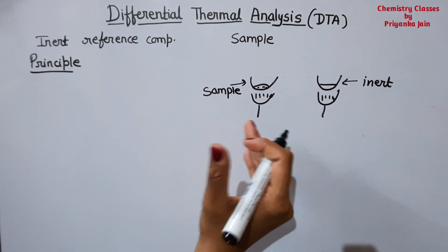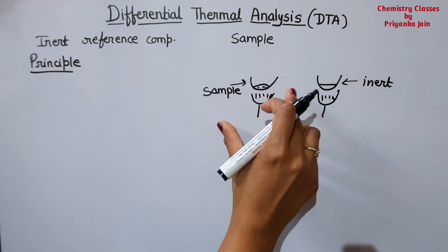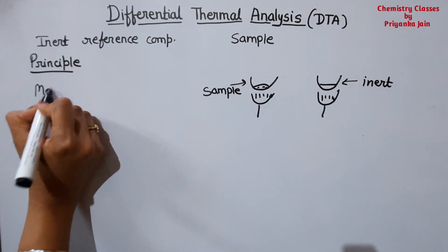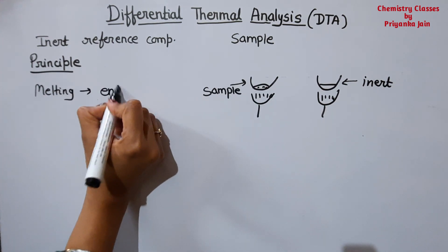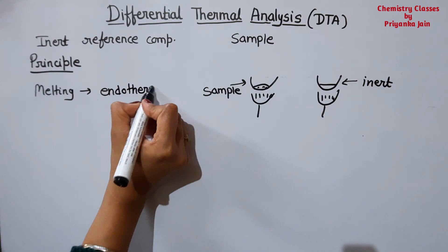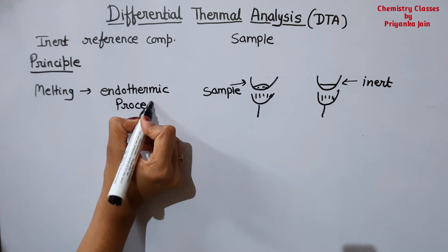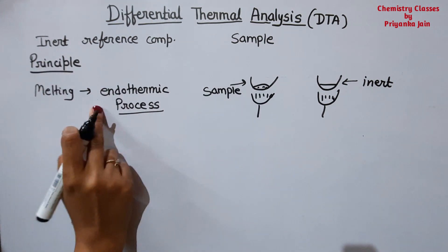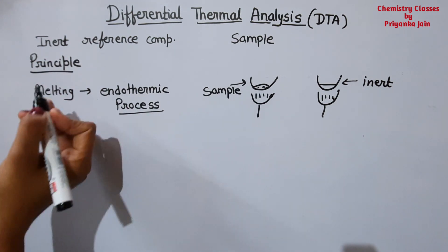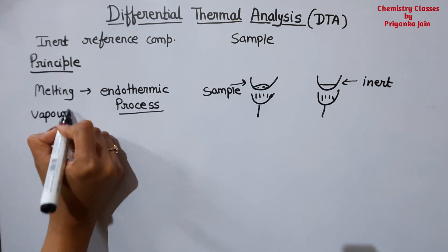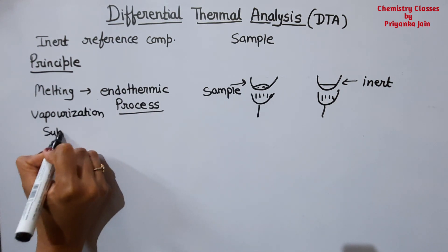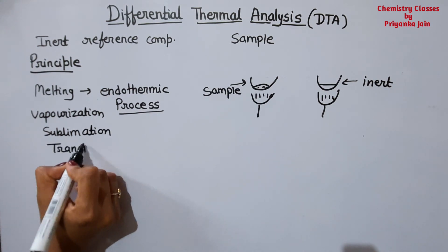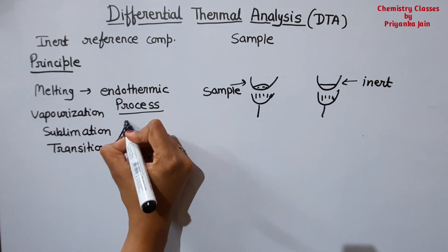When we are heating the sample, its temperature will rise and it will undergo some physical or chemical process. Suppose it is melting — melting is an endothermic process. Endothermic process means heat is being absorbed. Examples include melting, vaporization, sublimation, or transition from one state to another — all of these processes are endothermic.